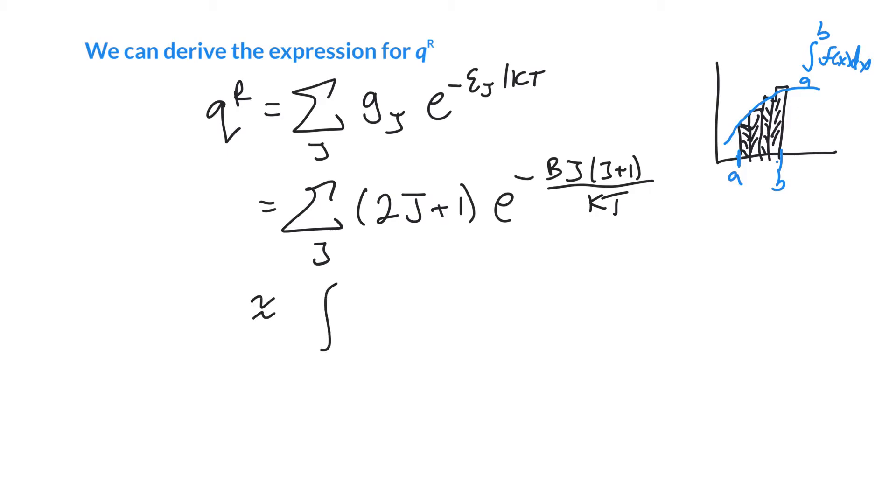we can approximate the area of those strips as the area under the function - the integral. So this is our approximation. We're going to say this is approximately equal to the integral. Now we're varying j, so our limits are j equals zero and j equals infinity. So j can go all the way up, presumably, although unless we're at infinite temperature, it probably doesn't matter about those infinitely high levels.